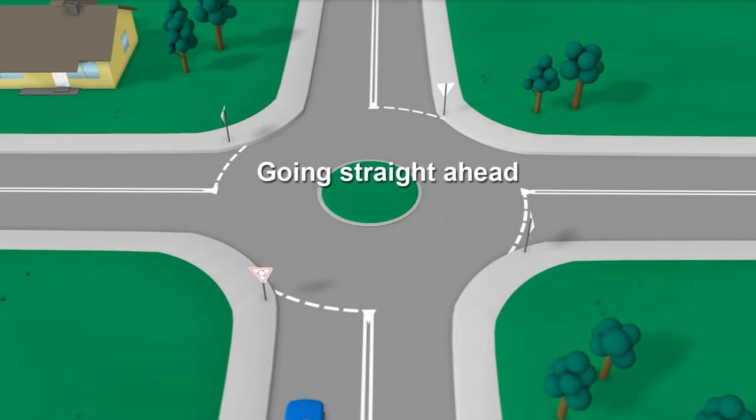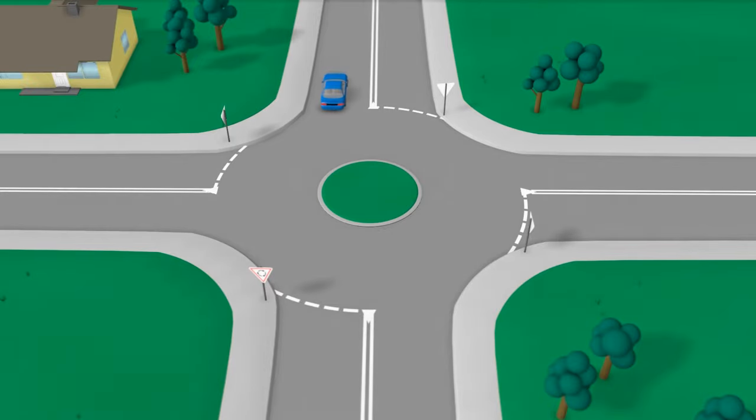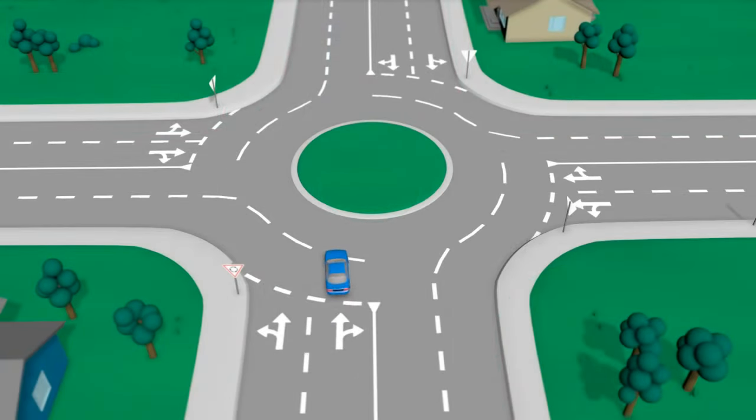Going straight ahead. You don't need to signal when approaching the roundabout if you are going straight ahead. You may approach the roundabout from either the left or right lane, unless there are road markings with other instructions.